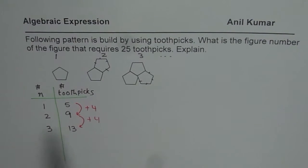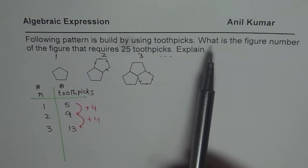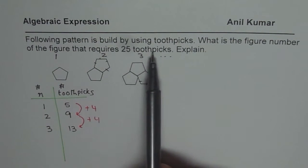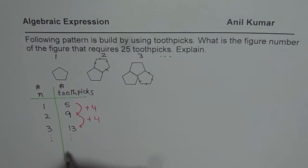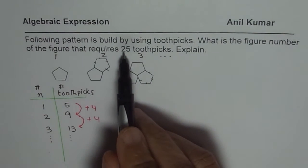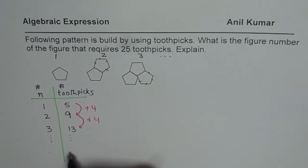So now we need to find what is the figure number for 25 toothpicks. So one method is we could continue this pattern and see when we get 25. And we can read the value of N and that should be our answer. So that is one way to solve it. So there are many ways to solve. That is indeed a very good way of solving. Well, in this case, we only go for 25 toothpicks. So it's not that difficult.